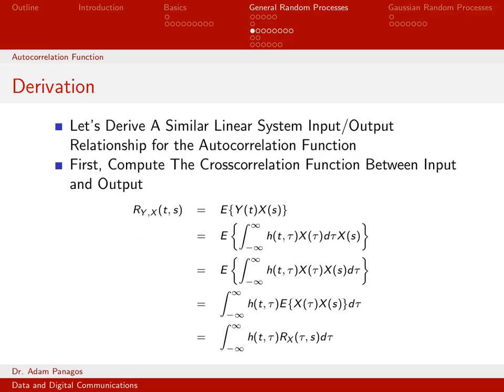Remember how the cross-correlation function is defined. In terms of notation, we call it r sub y comma x. It's a two-dimensional time function, and by definition it's equal to the expected value of y(t) times x(s). Here x(s) is the input random process and y(t) is the output random process of the linear system. For a general linear system, the output y(t) is given by the integral from minus infinity to infinity of h(t, τ) times x(τ) dτ. All we've done is replace y(t) with this integral representation, which is valid for an arbitrary linear system.